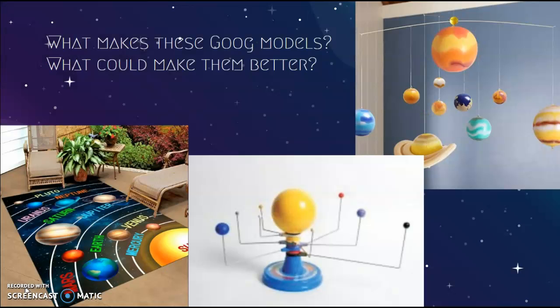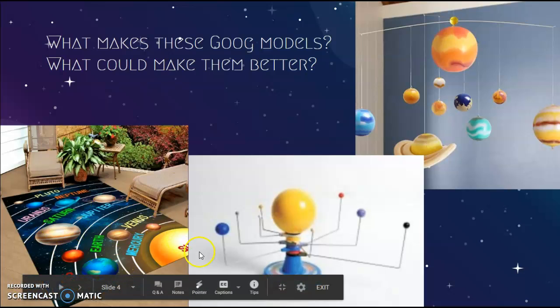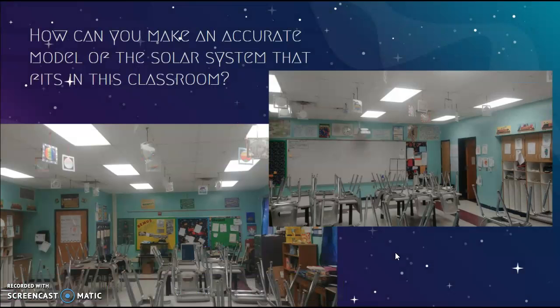I would start off by asking my students about what makes a good model and what could make a model better, and I included three pictures of different kinds of solar system models. The question that I would pose to the students is: how can you make an accurate model of the solar system that actually fits within a classroom? Here are just a couple of pictures of what my classroom looks like.